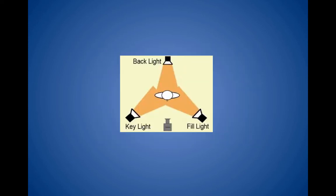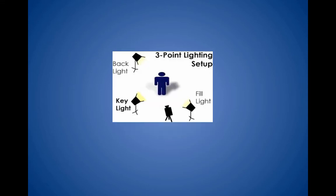The next rule is three-point lighting. Here we have a person being lit with three lights: a key light, fill light, and backlight. The backlight separates the subject from the background so they don't blend in — it creates separation and depth. The key light highlights what we're looking at, and the fill light lessens the shadows and softens the light being thrown on the subject.